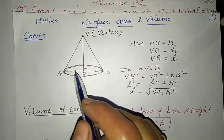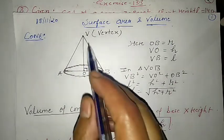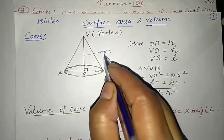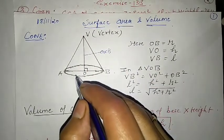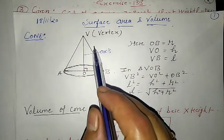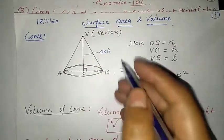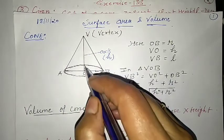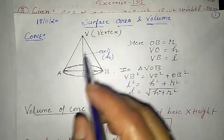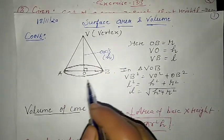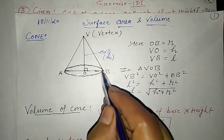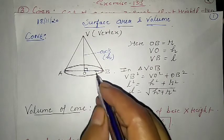VO is called the axis of the cone. The length VO of this axis is called the height, denoted by h. The radius of the circle - either OB or OA - is known as the radius, denoted by r, and the full diameter is known as the diameter.